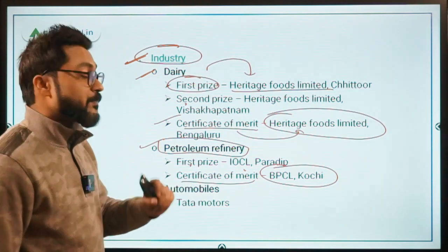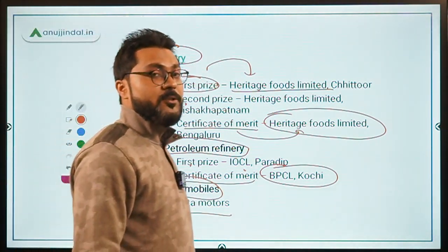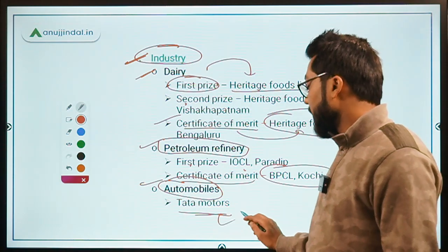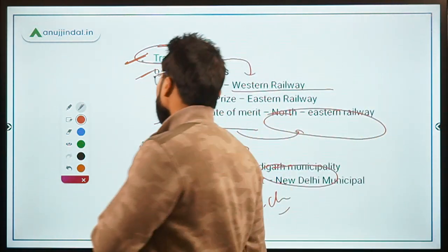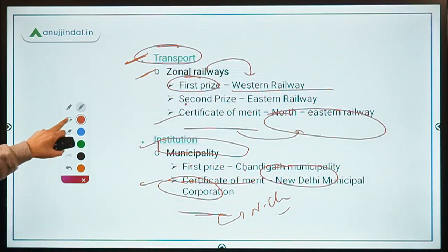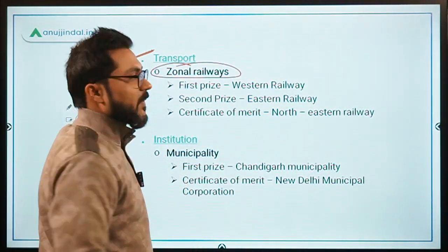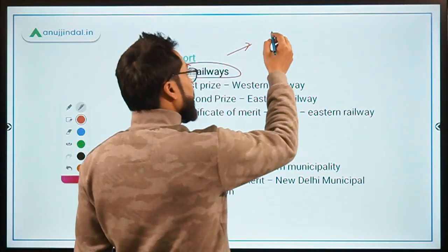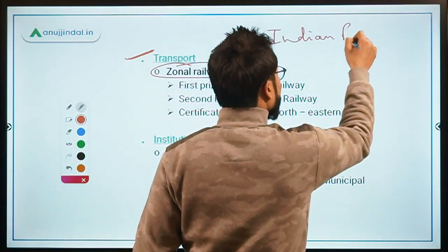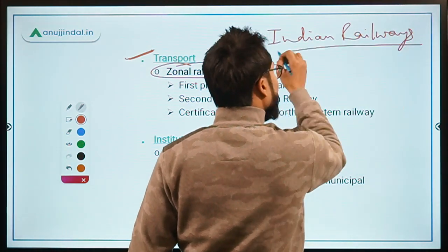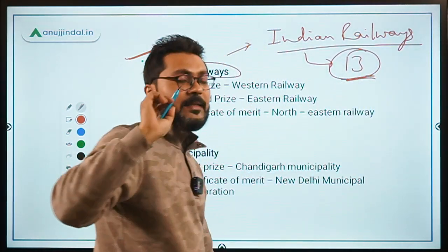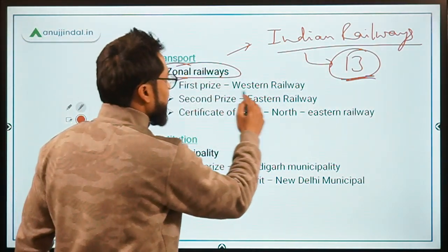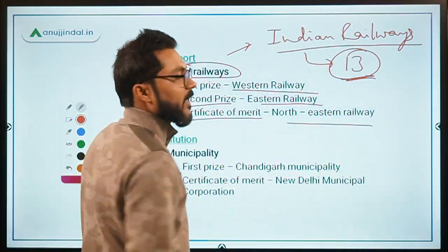In the automobile subcategory, Tata Motors received the first prize in the industry category. Tata Motors' current chairperson is Mr. N. Chandrasekaran. In the transport category, under the zonal railways subcategory, the maximum number of awards at this event went to Indian Railways — 13 awards in various categories and subcategories. The first prize went to Western Railway, second prize to Eastern Railway, and the certificate of merit to Northeastern Railway.